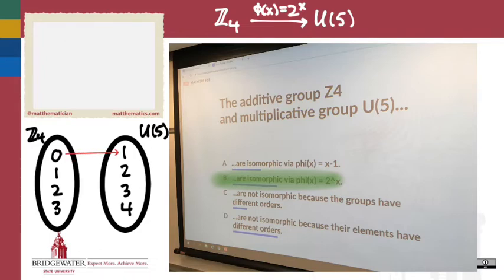when I take 2^0, that's going to give me 1—that maps the identity to the identity. 2^1 gives me 2, 2^2 gives me 4, and 2^3 gives me 8, which mod 5 is the same as 3.